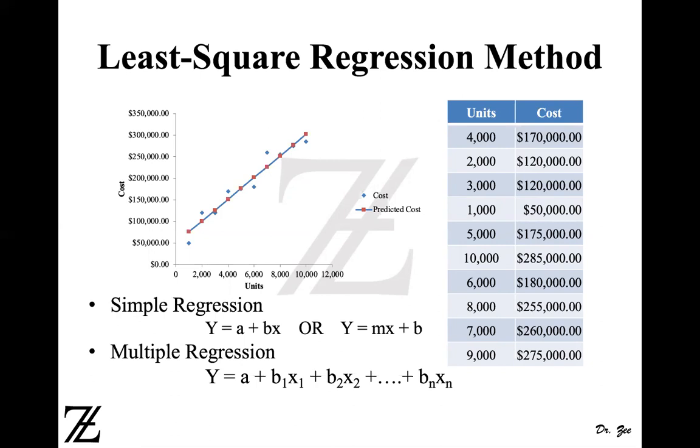Regression line can be estimated using different methods. If you have one independent variable, we use simple regression line. The equation of simple regression line looks like the equation of line when we use slope: y equals mx plus b. The simple regression line is y equals a plus bx, where a is the fixed cost, b is your variable cost per unit, and x is your number of units. That's simple regression.